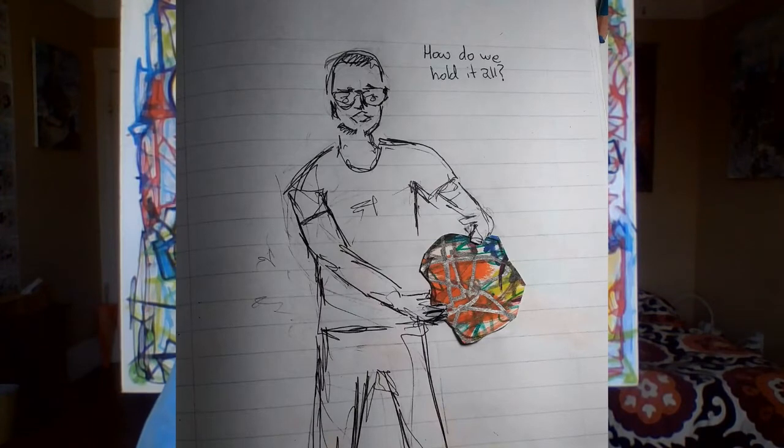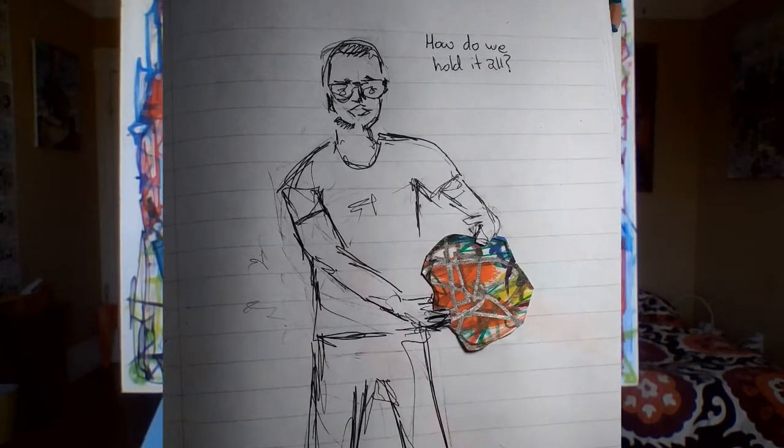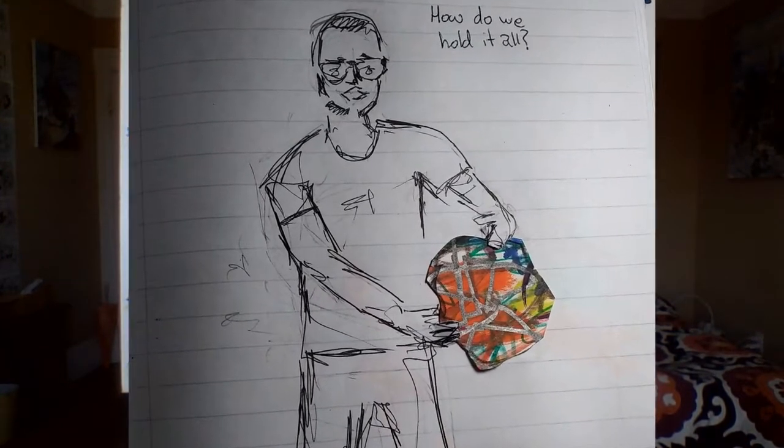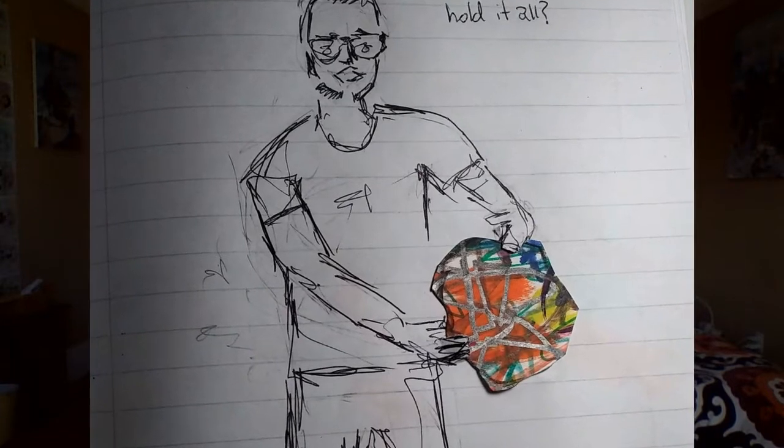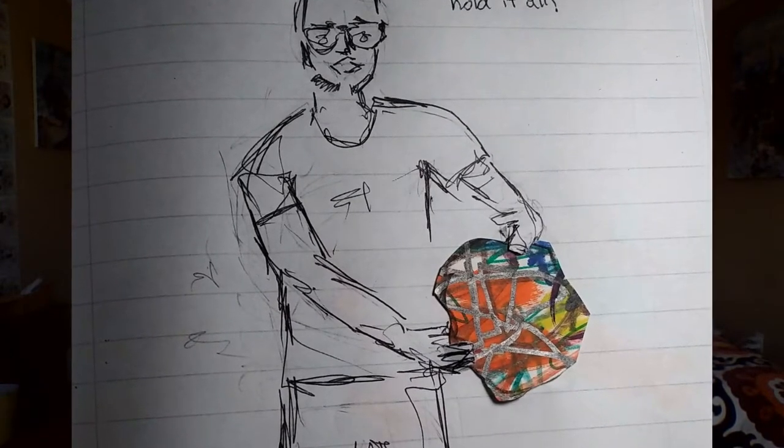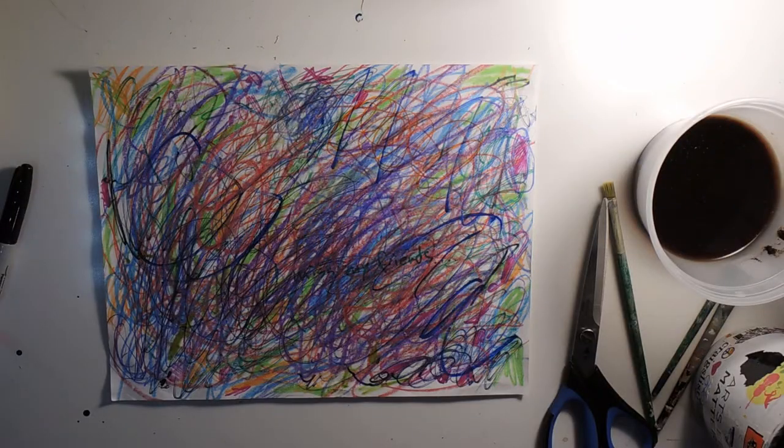Today's lesson is going to be about just taking that paper that's filled with scribbling, that has some personal meaning, and just finding ways to make that part of other pieces of artwork. So the question we're asking is, how do we hold it all? If we have these worries and scribbles to represent it, what do we do with that?